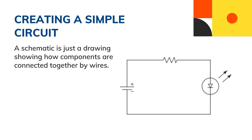We call this connection a ground, because it is used as the reference for all voltages in the circuit. Ground may or may not be connected to the actual earth, but it is always the reference from which you measure all other voltages. Here is a figure of a schematic — a drawing showing how components are connected together by wires.